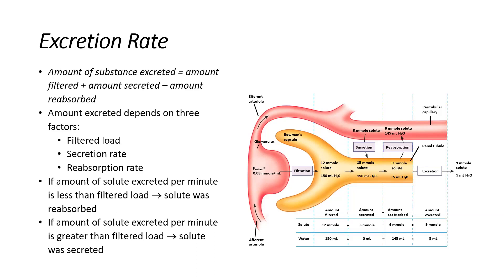Let's talk about the trend we see with these three processes. If the amount of a solute excreted per minute is less than the amount filtered, we know that solute was reabsorbed — some of it had to go somewhere else. Likewise, if the amount excreted is greater than what is filtered, we know additional solute came from somewhere else, meaning that solute must have been secreted.